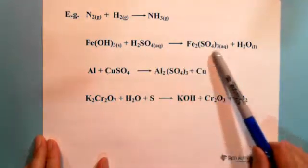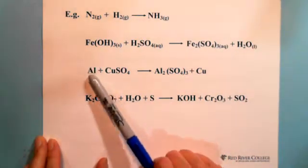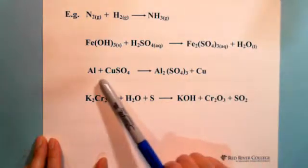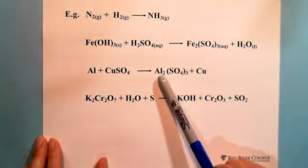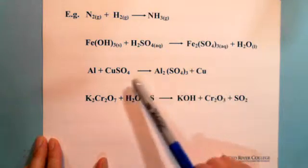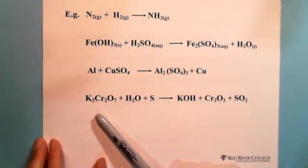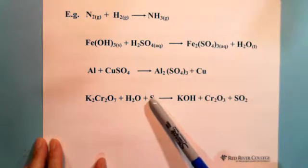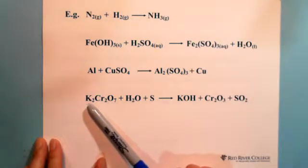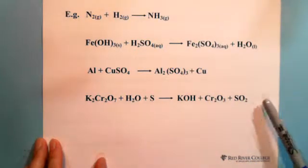The third example: aluminum before reaction is a single element — zero charge — and after reaction becomes a compound with a positive three charge. That is a charge change. Copper before reaction is in a compound with positive two charge, and after reaction is zero — charge changed. So the third one is a redox reaction. The fourth one similarly has a single element that is zero charge becoming a compound with positive charge after reaction, so this is also a redox reaction.